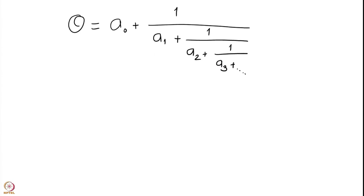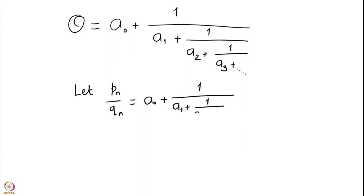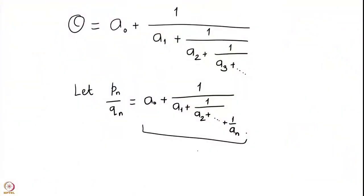If you cut it at any finite stage, we call it the convergent. If I cut it at the nth stage and do not take the whole continued fraction expansion going all the way to infinity, then of course this is going to be a rational number. We write it as Pn upon Qn, where Qn is a natural number, Pn is an integer, and we will also have that the GCD of Pn and Qn is 1.